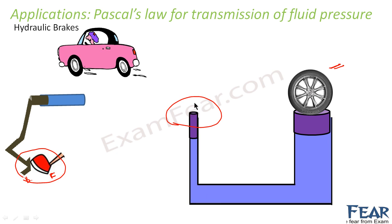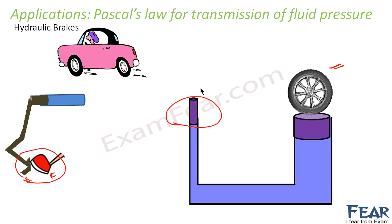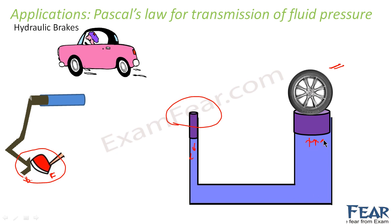So what happens is: initially the wheel is moving. As soon as you apply a force on the pedal, the pressure is exerted on the fluid, and the same pressure gives rise to a force on the larger cross-sectional area end which is connected to the wheel. Because of that force, the wheel stops. This setup and the brake pedal is connected to all four wheels. As soon as all four wheels stop, the car stops.